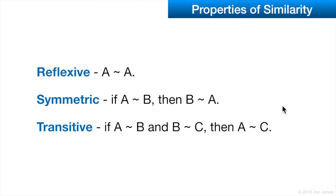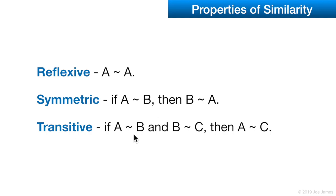The properties of similarity we've actually already covered — these are the same three properties that apply to congruence. Reflexive property means that any polygon is similar to itself. Symmetric means that if A is similar to B, then B is similar to A. And the transitive property states that if A is similar to B and B is similar to C, then A is similar to C.